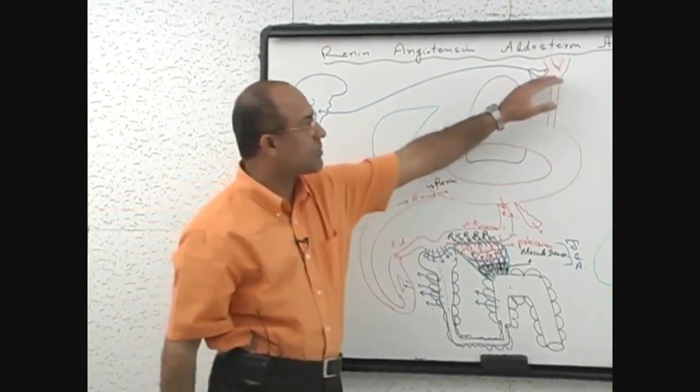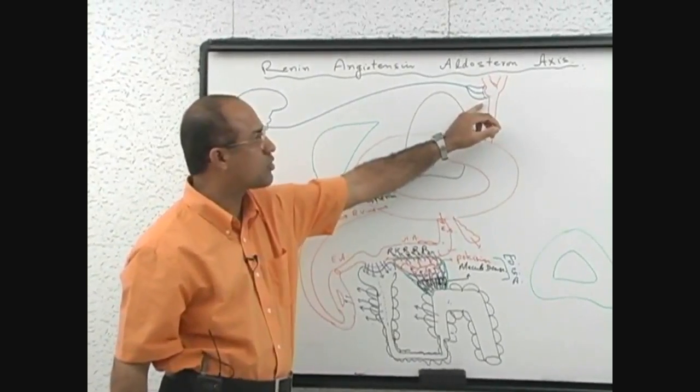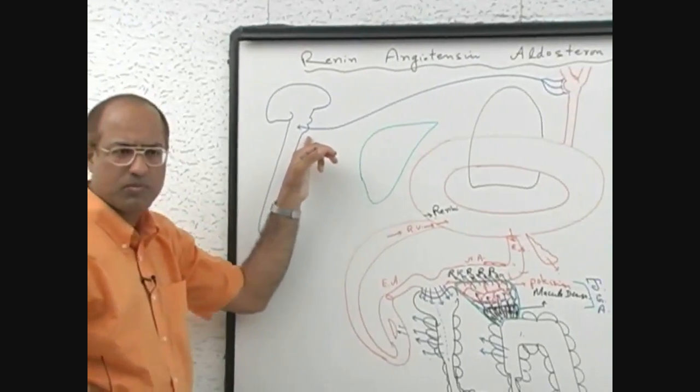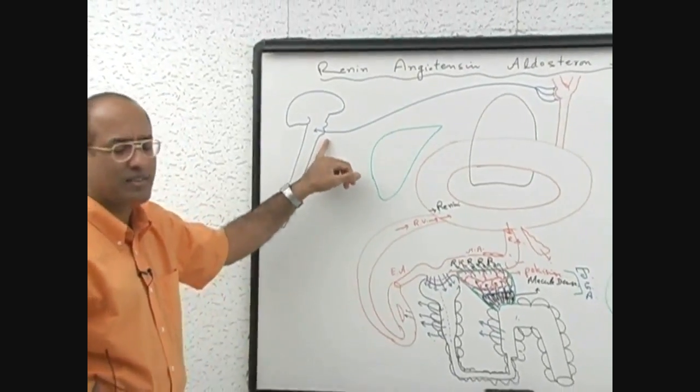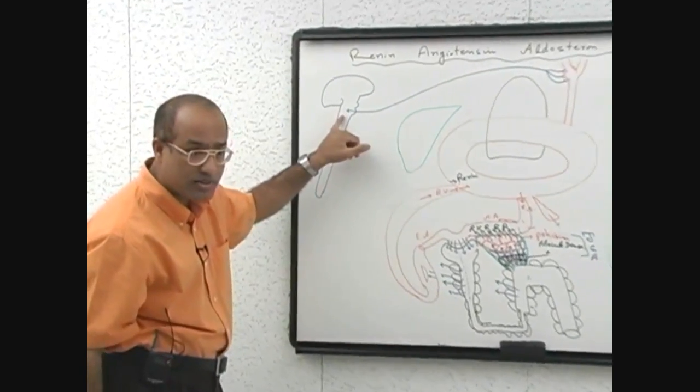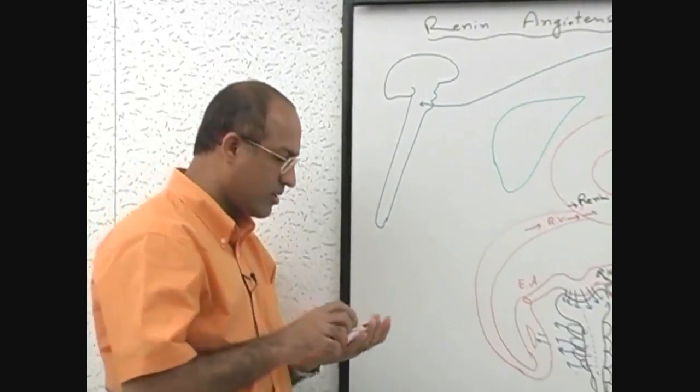Let's come back. As soon as blood pressure goes down, carotid sinus through the sinus nerves - this is through the vagus, 9th nerve, glossopharyngeal nerve - this message is given to the central nervous system that blood pressure is going down.